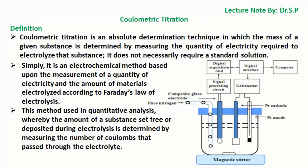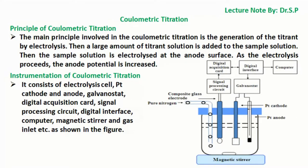A simple illustration of coulometric titration is shown in the figure. The main principle involved in coulometric titration is the generation of the titrant by electrolysis. Then a large amount of titrant solution is added to the sample solution. The sample solution is electrolyzed at the anode surface. As the electrolysis proceeds, the anode potential is increased.